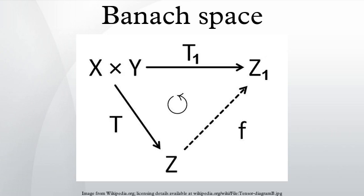If X and Y are normed spaces, they are isomorphic normed spaces if there exists a linear bijection T from X to Y such that T and its inverse T⁻¹ are continuous. If one of the two spaces X or Y is complete, then so is the other space. Two normed spaces X and Y are isometrically isomorphic if, in addition, T is an isometry, that is, ‖Tx‖ = ‖x‖ for every x in X.